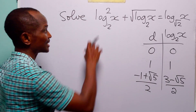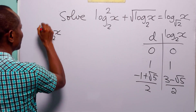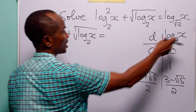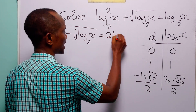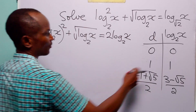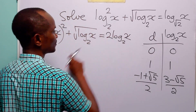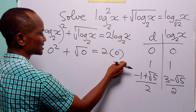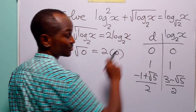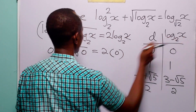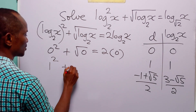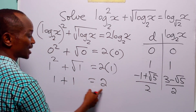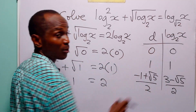To check our answers, we rewrite the equation as log₂x squared plus root of log₂x equals 2 times log₂x. Substituting 0 for log₂x: 0 squared plus root 0 equals 2 times 0, that is 0 equals 0 — correct. Substituting 1 for log₂x: 1 squared plus root 1 equals 2 times 1, so 1 plus 1 equals 2 — correct. The left-hand side equals the right-hand side in both cases.